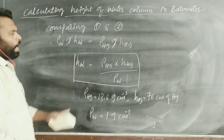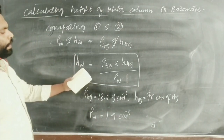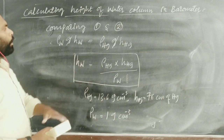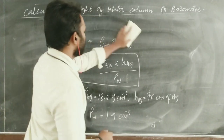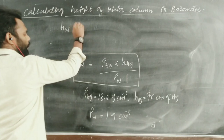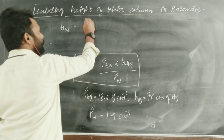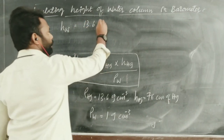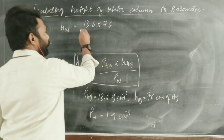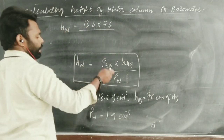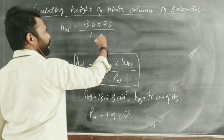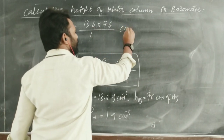Substituting these values, the height of water column equals 13.6 multiplied by 76, divided by 1 g/cm³. Multiplying 13.6 by 76, we get 1033.6 centimetres.